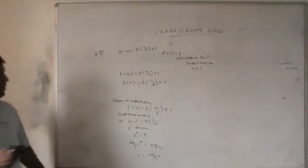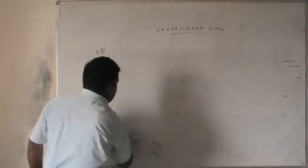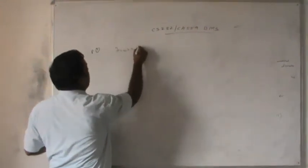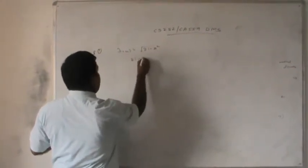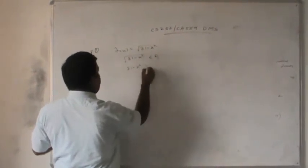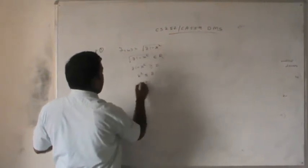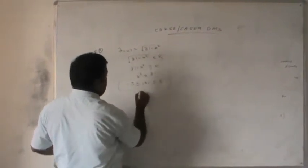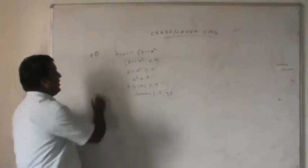Problem 2: find the domain of f(x) = √(81 − x²) for real values. We need 81 − x² ≥ 0, so x² ≤ 81, giving |x| ≤ 9. Therefore the domain is x ∈ [−9, 9].